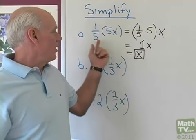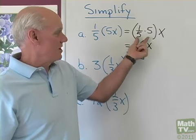So if you want to know the reason why 1/5 times 5x is x, it's because of the associative property.